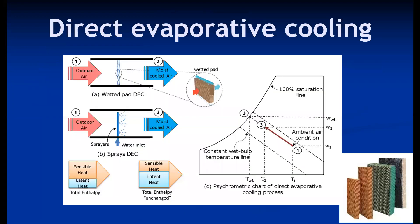This is a direct evaporative cooling system where cooling is achieved with the help of a wetted pad or by spraying water. In direct evaporative cooling, generally cooling and humidification take place. When air is made to flow over a wetted pad where water continuously drips, it gains moisture and at the same time loses heat. The same operation happens if air flows over sprayed water. In ideal cases, this process is called adiabatic humidification, where total enthalpy remains constant.